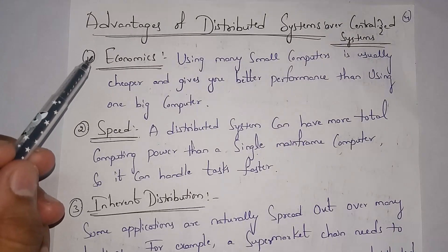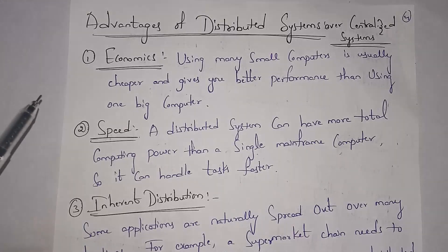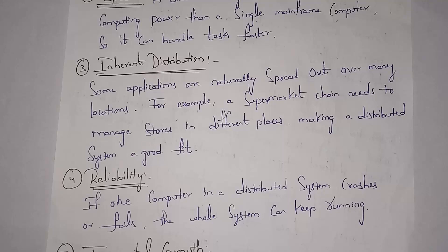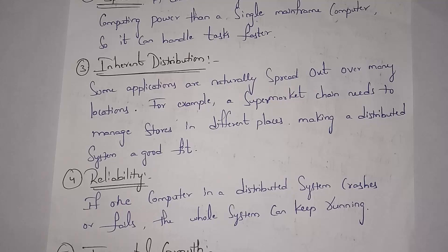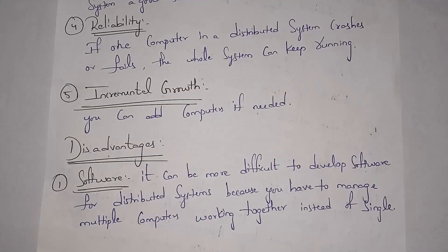Advantages of distributed systems over centralized systems: first, economics — instead of purchasing one high-configuration system, you can purchase many small cheaper computers. Second, speed — distributed systems have more computing power than a single computer so tasks complete faster. Third, inherit distribution — some applications are spread over many locations, such as supermarkets like Dmart which are present in multiple locations, making distributed systems a good choice for such scenarios. Fourth, reliability — even if one computer fails, remaining computers work.